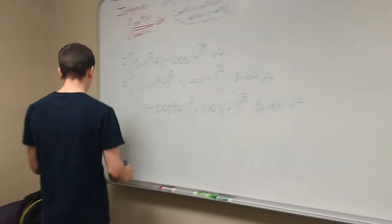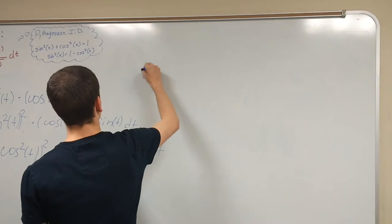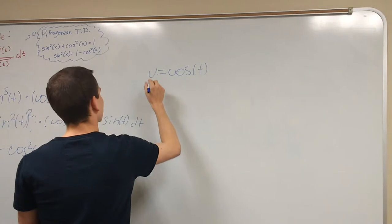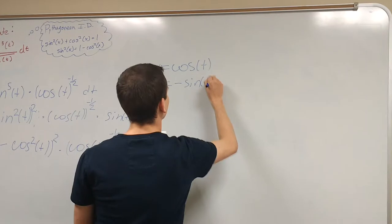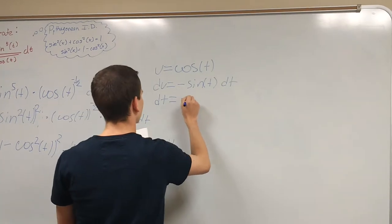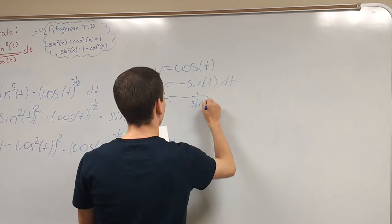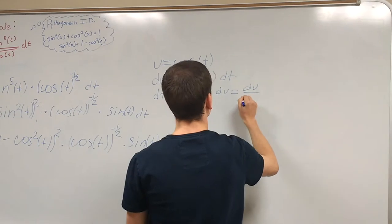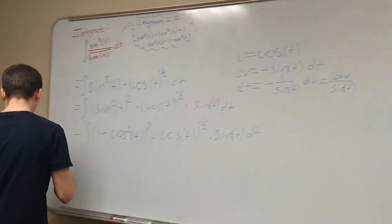Right, so we're going to do a substitution. And we're going to substitute cosine for u. So the du will become negative sine of t dt. And dt will become negative one over sine of t du, which is du over sine of t. Alright.